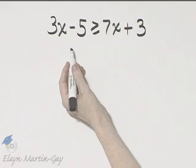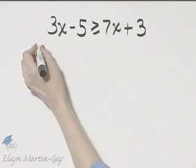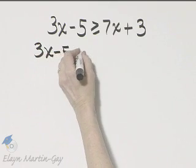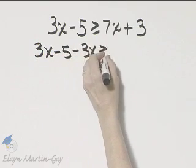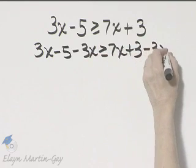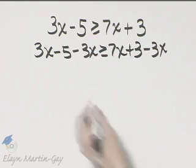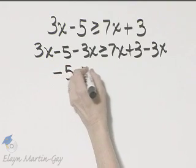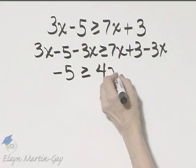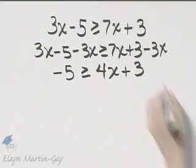I will begin by subtracting 3x from both sides. So here's my left side, subtract 3x, and here's my right side, subtract 3x. Now let's simplify the left side. I have negative 5 greater than or equal to 7x minus 3x is 4x plus 3.